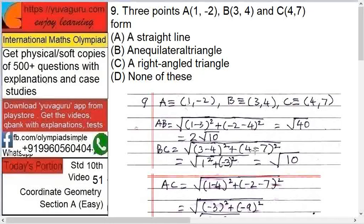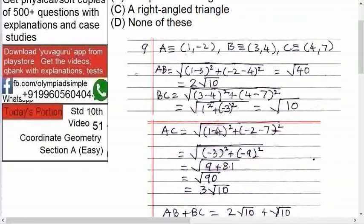BC equals root of (3 minus 4) whole square plus (4 minus 7) whole square. Solve it to get root 10. And AC equals root of (1 minus 4) whole square plus (minus 2 minus 7) whole square. Solve it and you get root 90, that is 3 root 10.